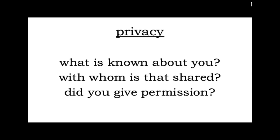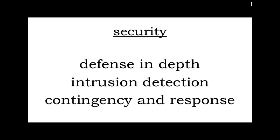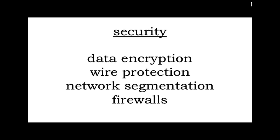An important clarification: privacy is not security. These are very different concepts. Privacy is about what information is known about particular users, with whom it's shared, and whether you've given permission to release it. Security is the IT-centric approach — defense in depth, intrusion detection, contingency protocols, data encryption, wire protection, network segmentation, and firewalls — protecting information that flows within and through networks.